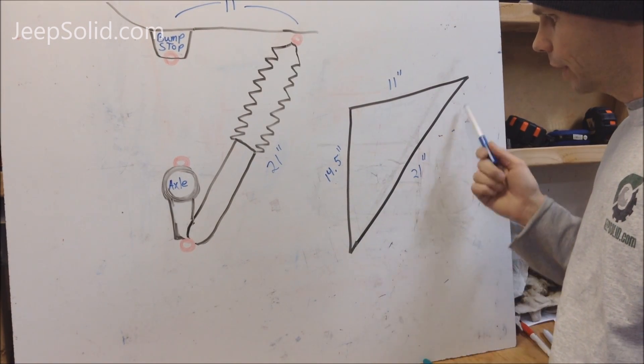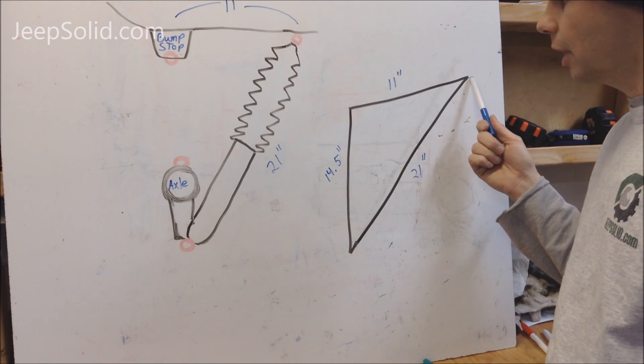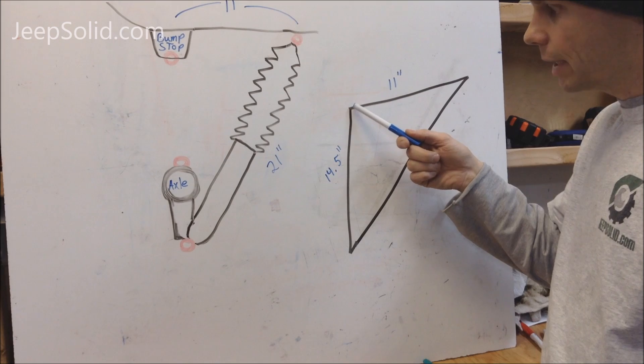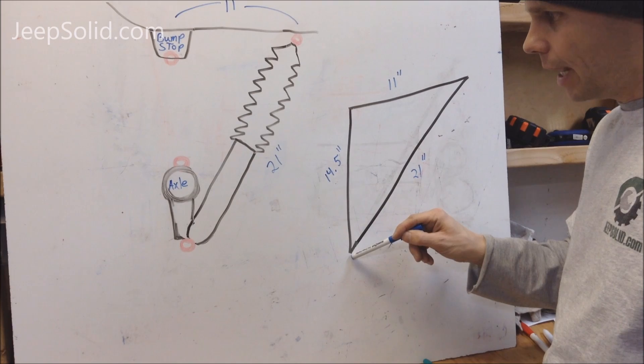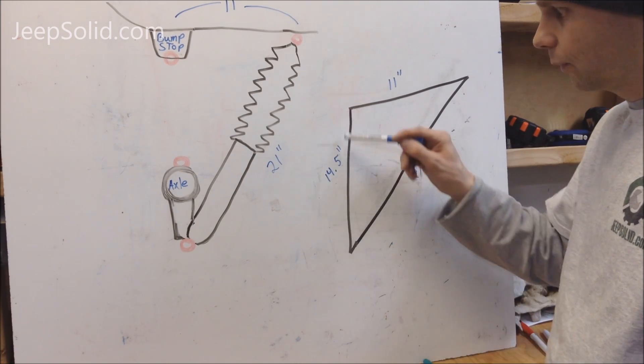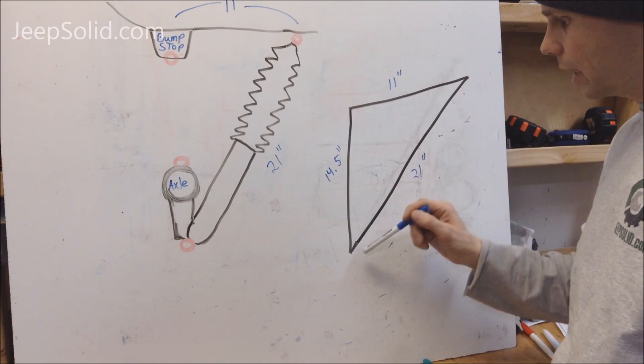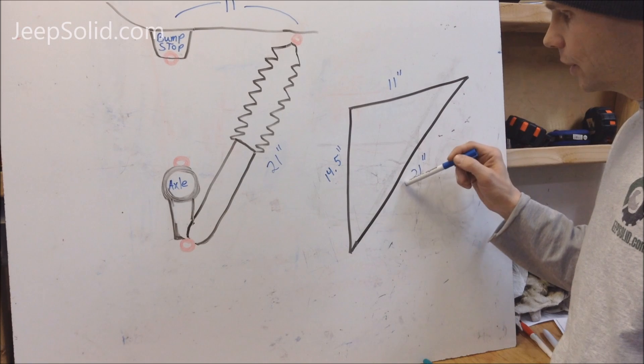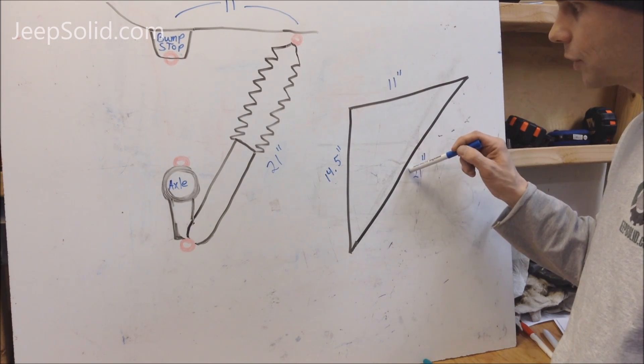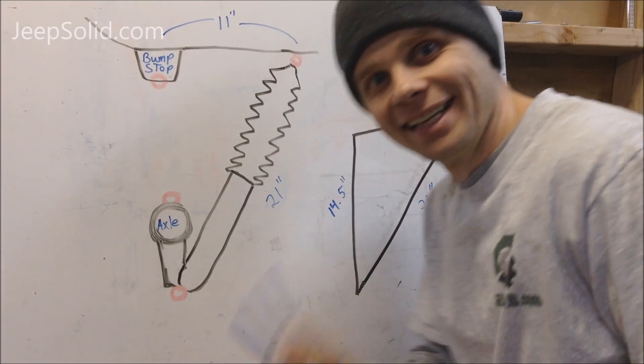The shock was 21 inches. It was 11 inches between the bump stop and the top of the shock mount. And then right now, with our axle fully extended, from the bump stop to the bottom of the axle mounting point is 14.5 inches. So this is with the shock fully extended at 21 inches. What we want to figure out next is what is our minimum compression of the shock as we shorten this length.